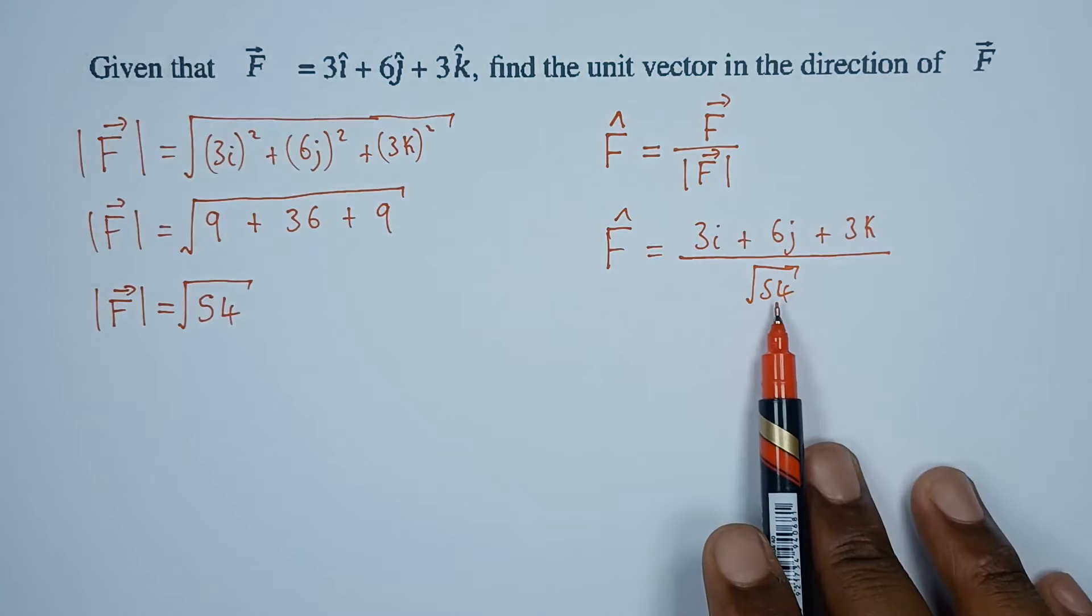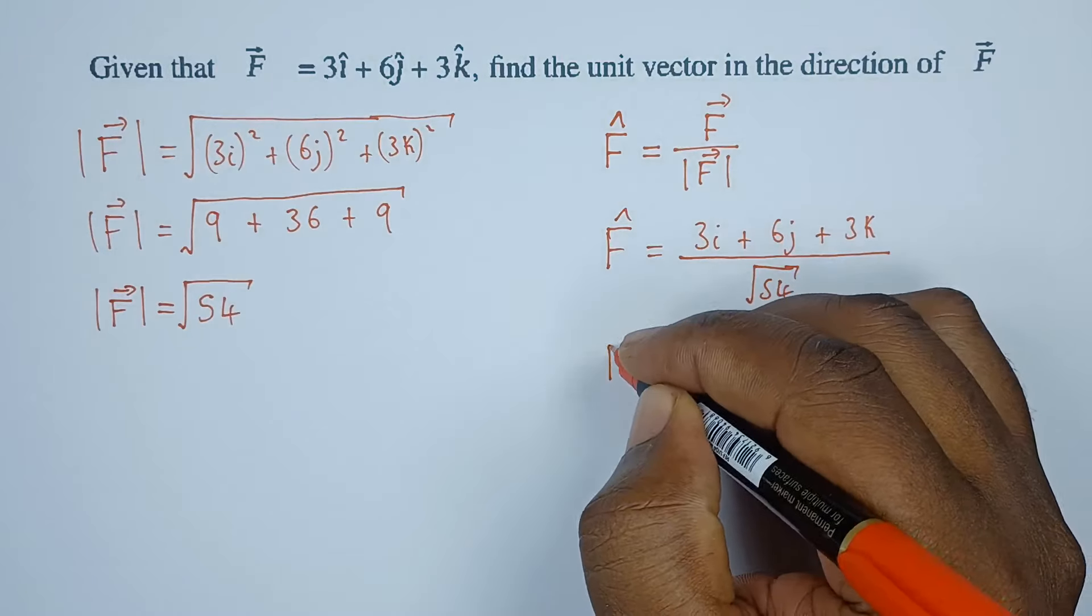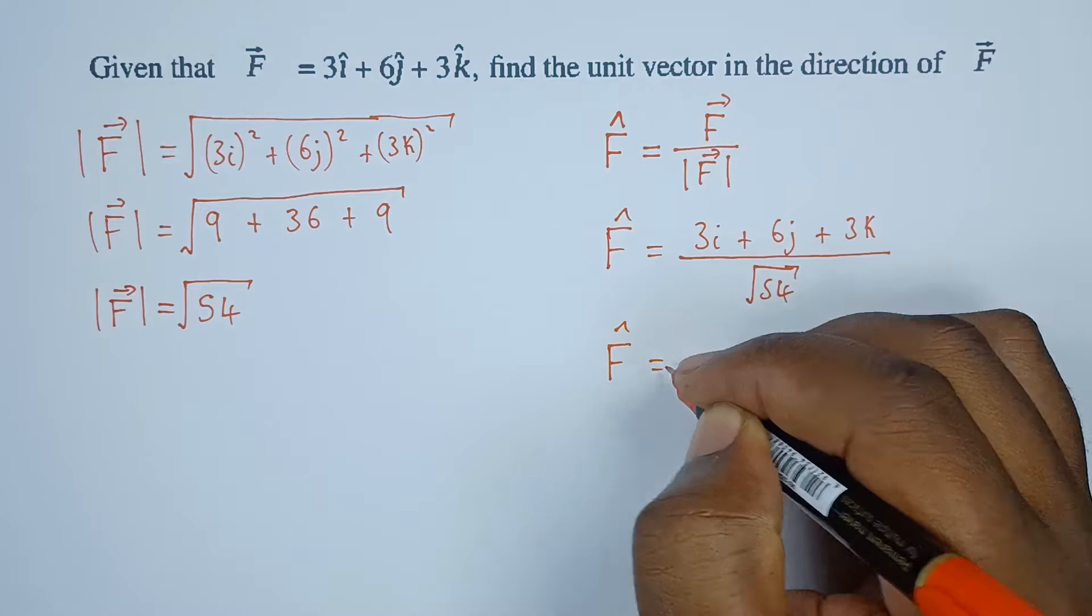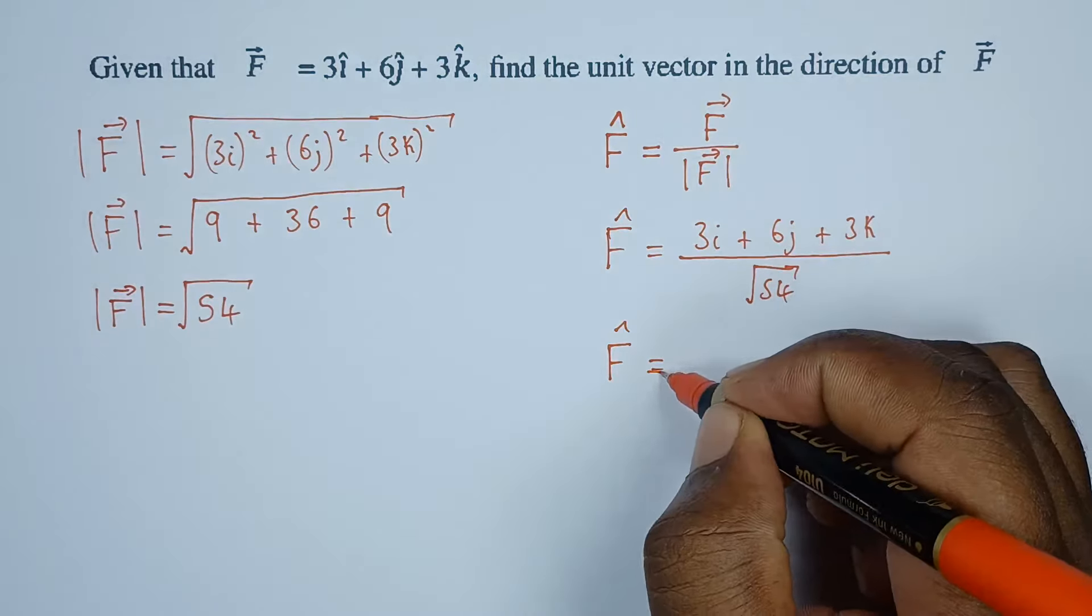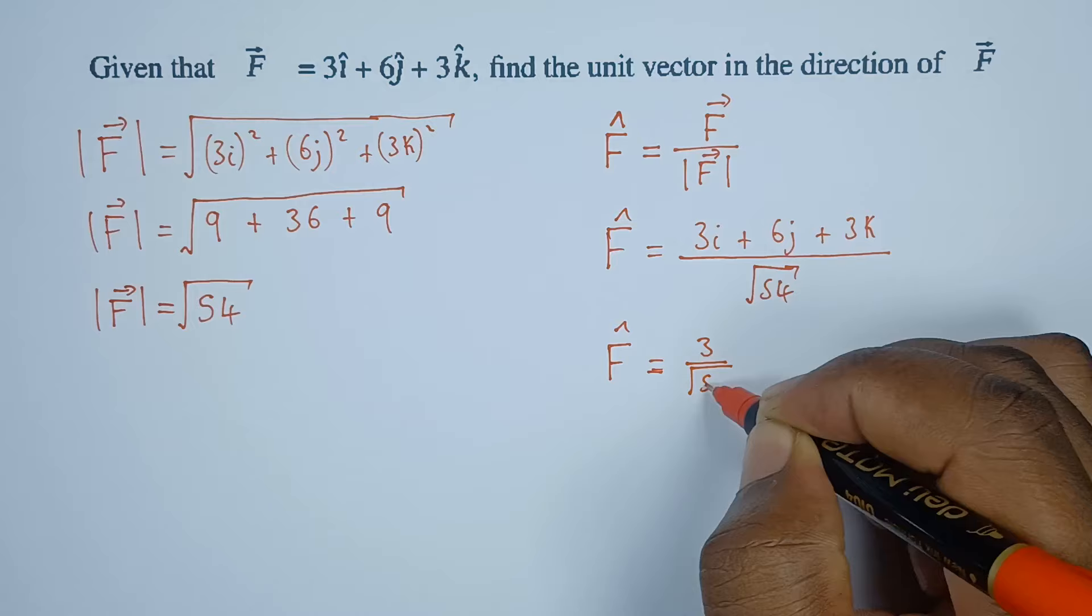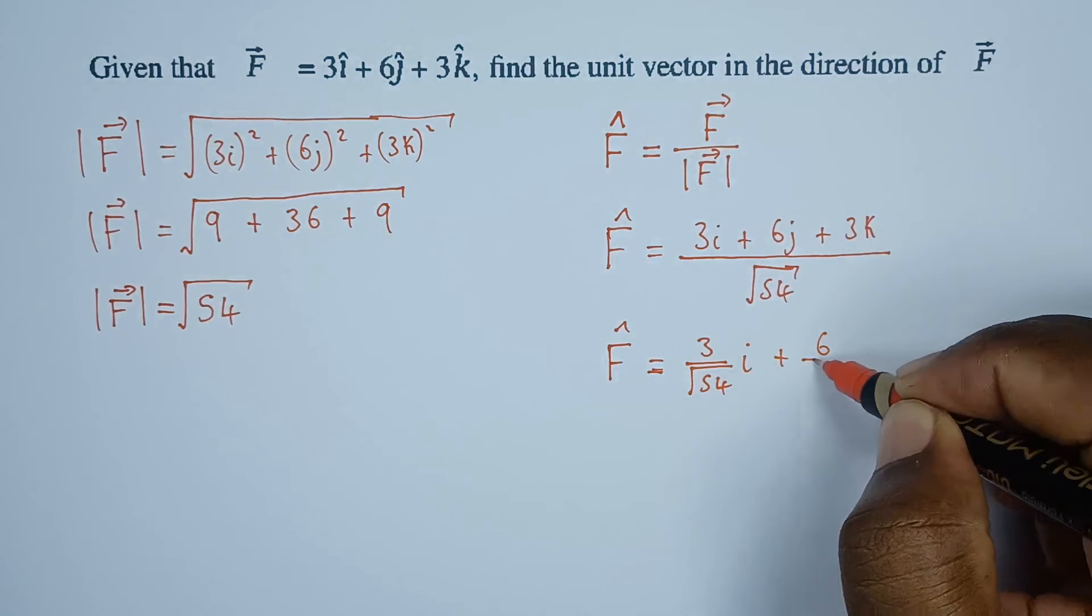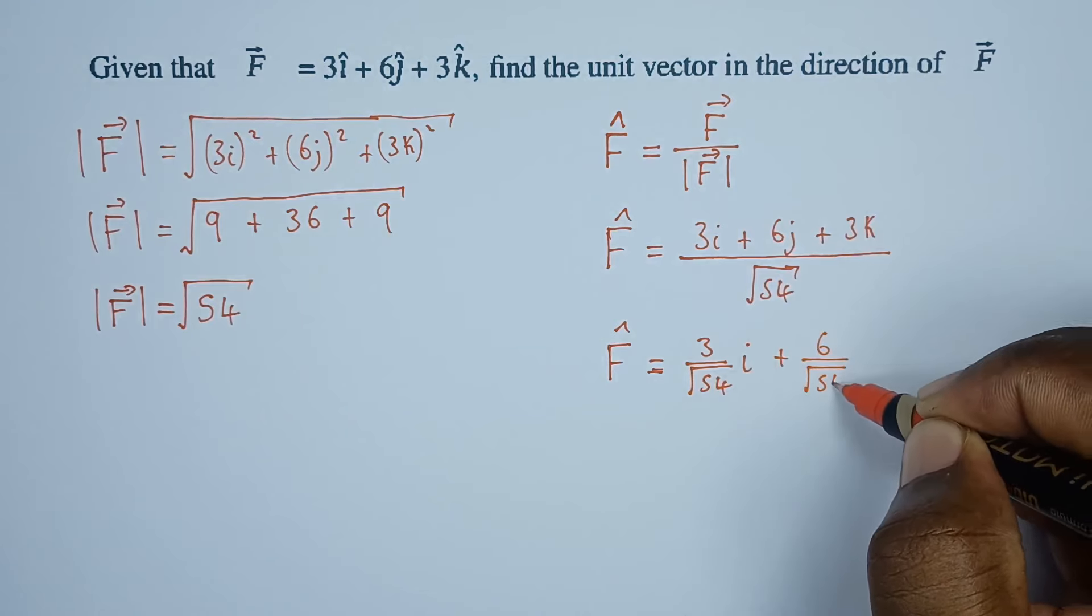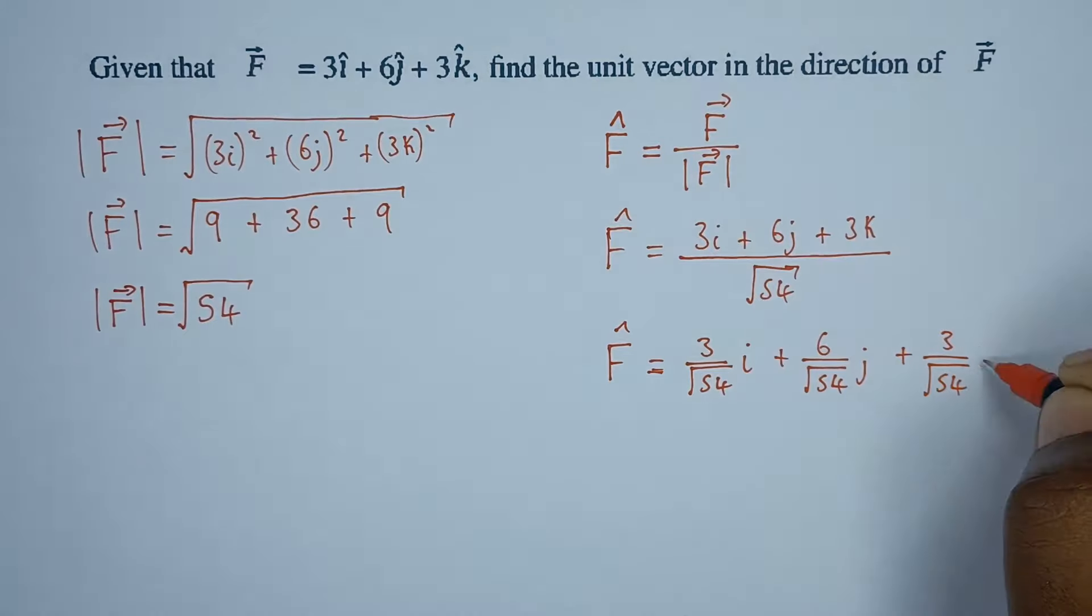This magnitude will divide by every component that we have here. So F, which is a new vector, which is the direction of the original vector F, will equal 3 over the root of 54 i plus 6 over the root of 54 j plus 3 over the root of 54 k.